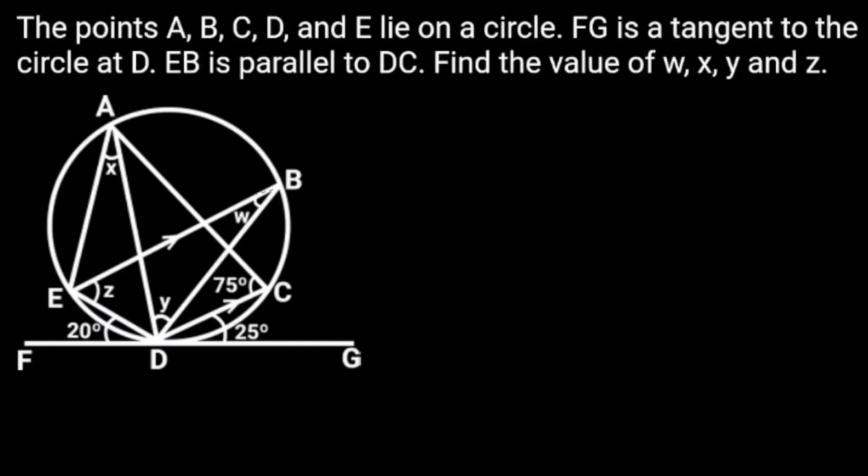Points A, B, C, D, and E lie on a circle. FG is a tangent to the circle at D. If line EB is parallel to line DC, find the value of W, X, Y, and Z.